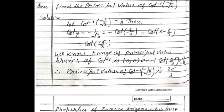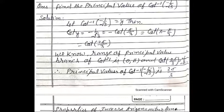The range of the principal value branch of cot⁻¹ is (0, π), and cot(2π/3) = −1/√3. Therefore, the principal value of cot⁻¹(−1/√3) is 2π/3.